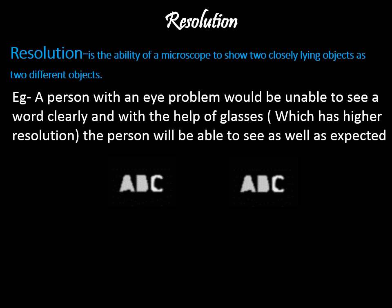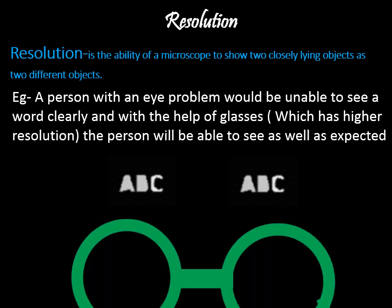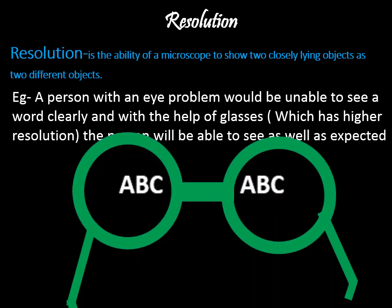So a higher resolution is needed in order for them to see things as clearly as us. Now if the letters A, B and C are displayed to a person with an eye problem, this is what he or she will see. As you can see, the letters are not very well distinguished. Now if this person is given a glass with a higher resolution or power, he will be able to see the letters more clearly.